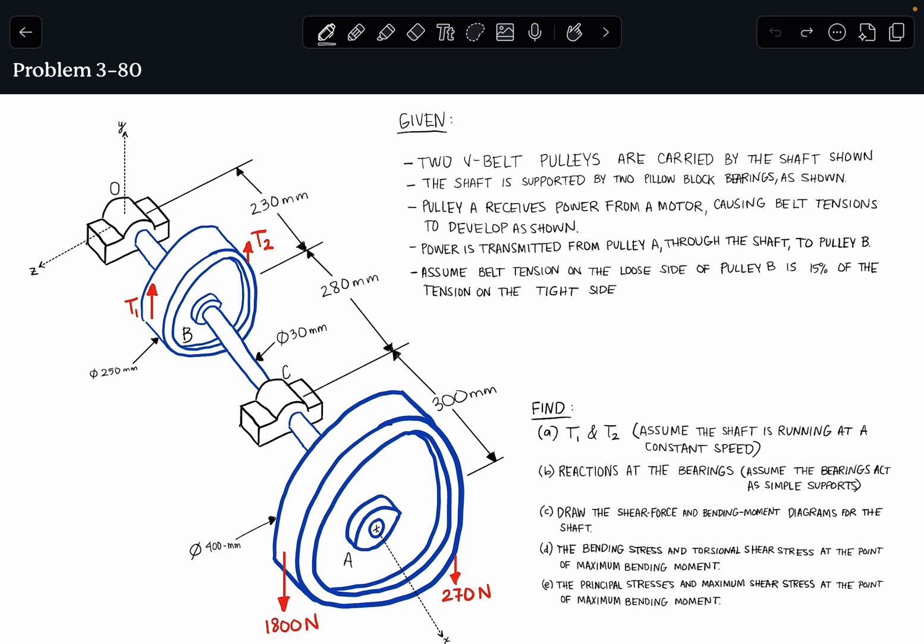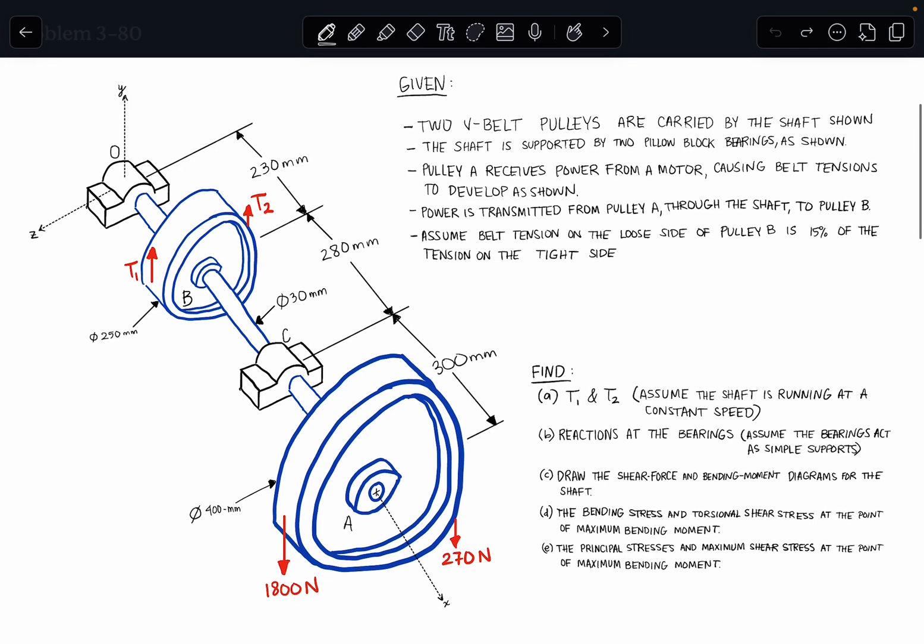So we are given the fact that we have two V-belt pulleys that are carried by the shaft drawn here, and if you are not familiar with a V-belt pulley, that just refers to the shape of the belt and the groove that sits in the pulley.